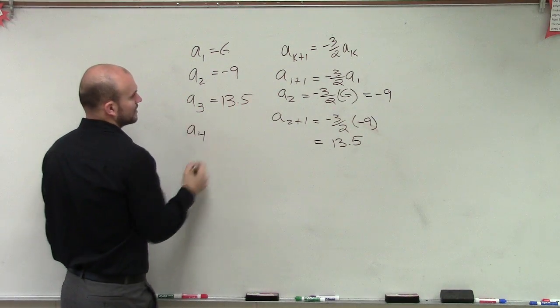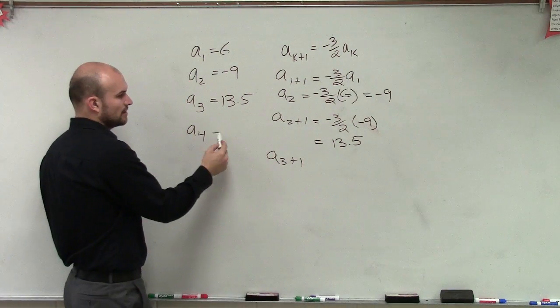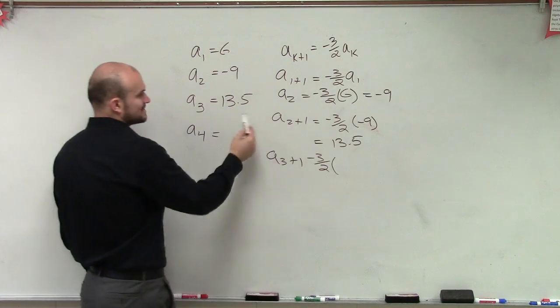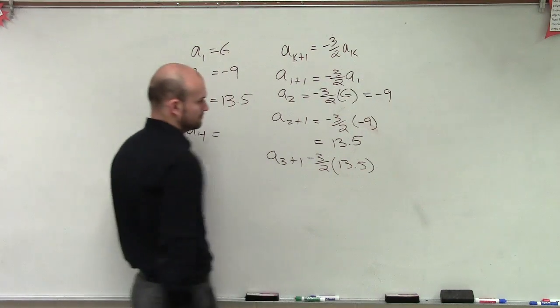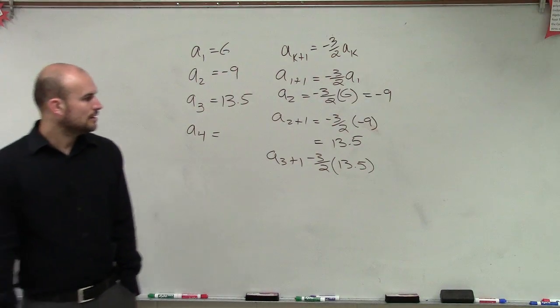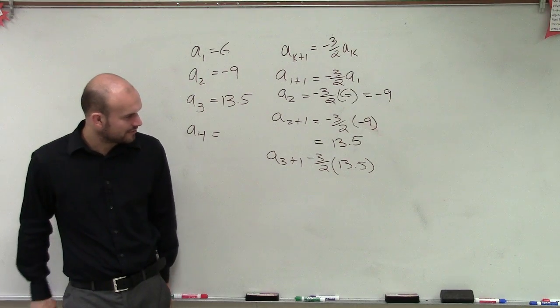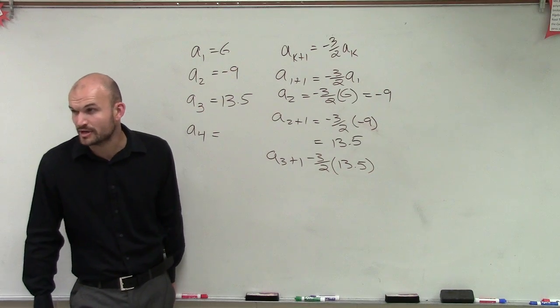And then we'll do our final one, a sub 4. So I'll do a sub 3 plus 1, which equals a sub 4, which is going to equal negative 3 halves times our a sub 3, which is 13.5. And then we'll have, let's see, that would be 39. So 40.5, and then divide by 2, so it would be 20.25.